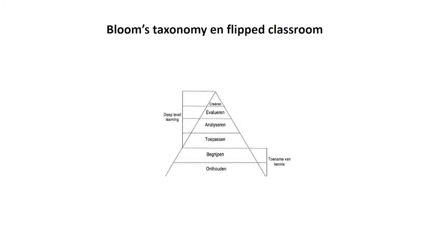Dit leermodel maakt deel uit van de cognitieve dimensies van Blooms taxonomie. De doelstellingen die in de les worden bereikt zijn van een hogere orde: dimensies zoals evaluatie, synthese, analyse en toepassing. Terwijl de lagere dimensies — begrip en kennis — worden gedegradeerd tot taken die de student zelfstandig moet uitvoeren en die door de docent worden gefaciliteerd.